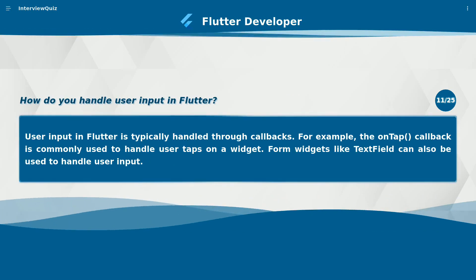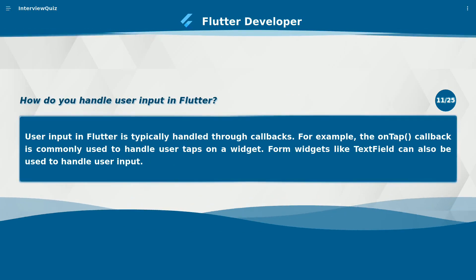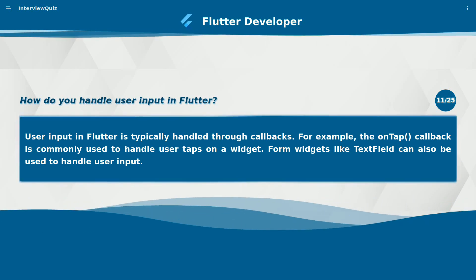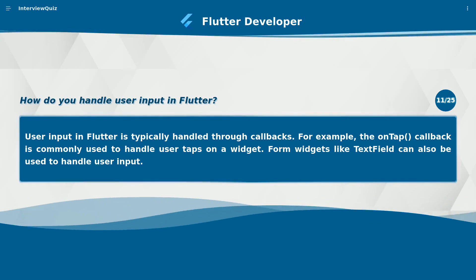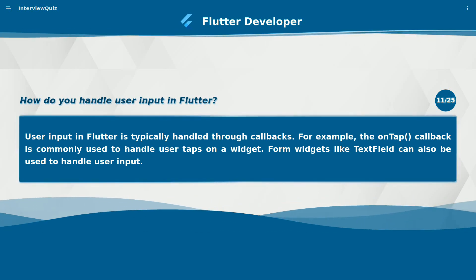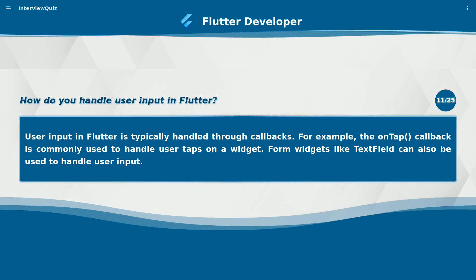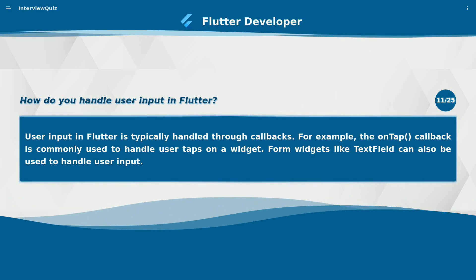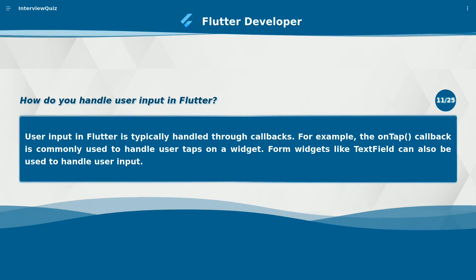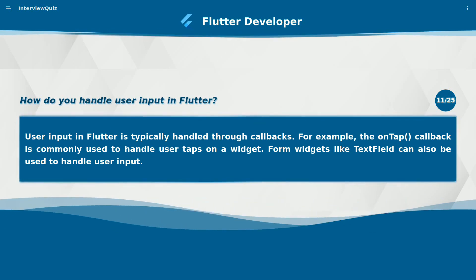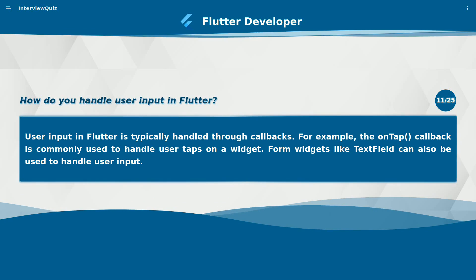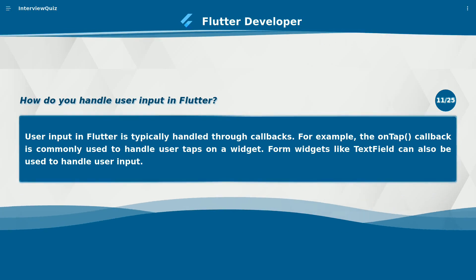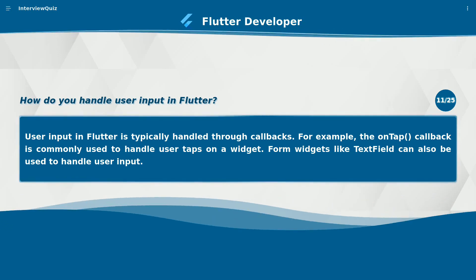How do you handle user input in Flutter? User input in Flutter is typically handled through callbacks. For example, the onTap callback is commonly used to handle user taps on a widget. Form widgets like TextField can also be used to handle user input.